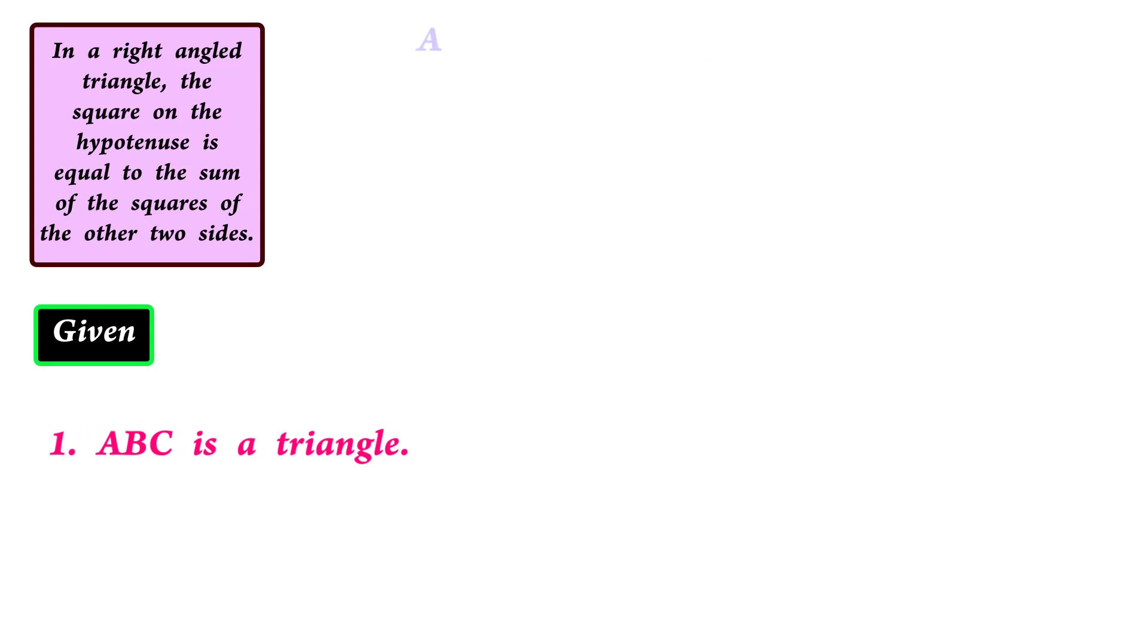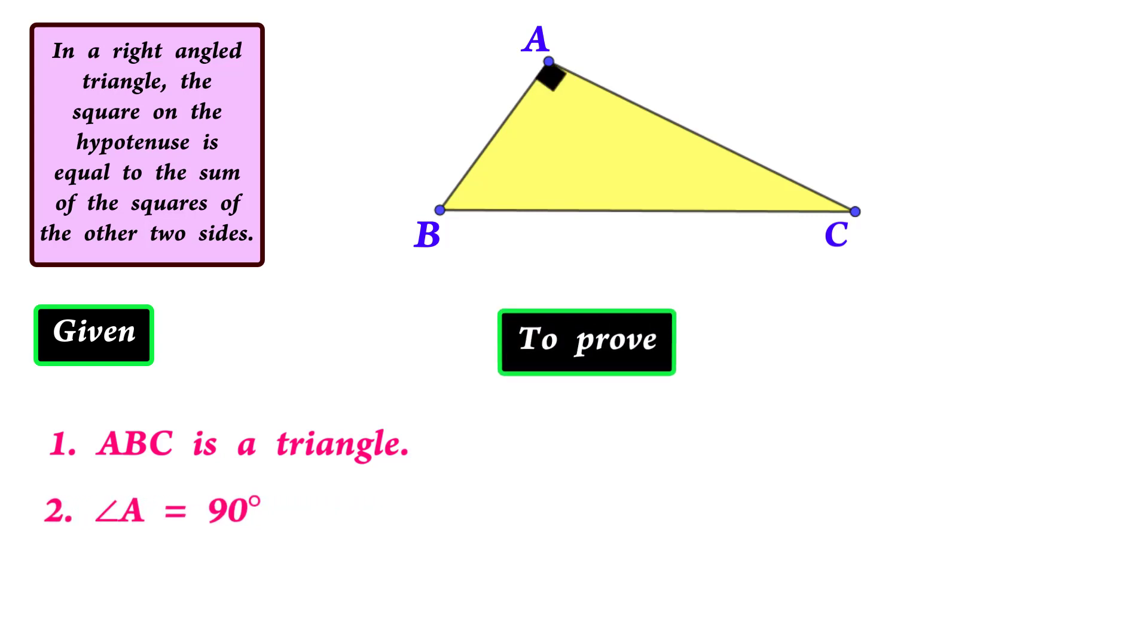Now let's move on to the actual theorem. This is what we are going to use. ABC is a triangle, angle A is 90 degrees. A little while ago I said we are going to use similar triangles.